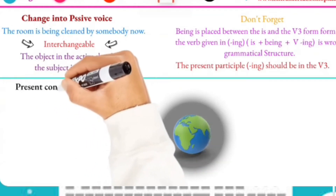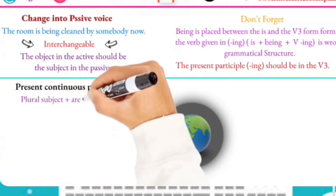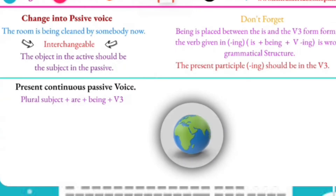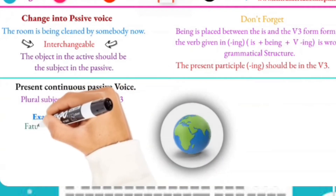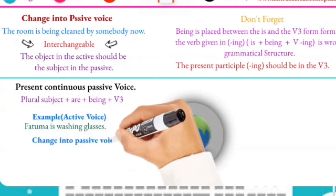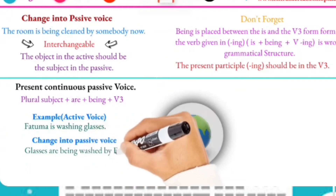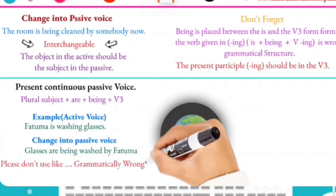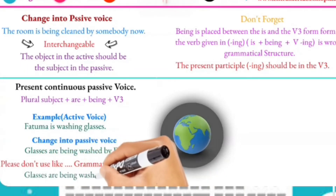For plural subjects, the formula is: plural subject plus are plus being plus verb three. For example: 'Fatouma is washing glasses' — this is the active form. The passive form is: 'Glasses are being washed by Fatouma.'